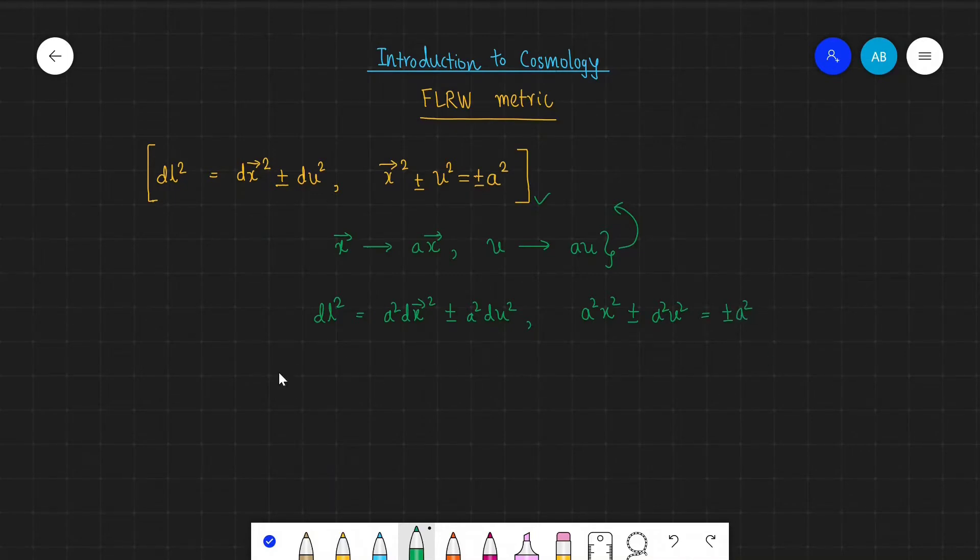So we can write it better as dl² equals a² times dx² plus-minus du², and in the constraint the a² terms cancel, so what remains is x² plus-minus u² equals plus-minus 1.